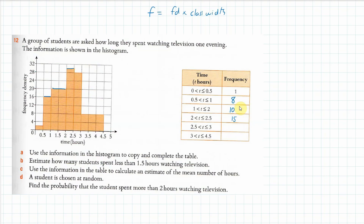Then 2.5 to 3 — again a half class width — and we're at frequency density 28, so 0.5 times 28 is 14. Finally, 3 to 4.5 is a class width of 1.5, and the frequency density is 8, so 8 times 1.5 gives us 12.